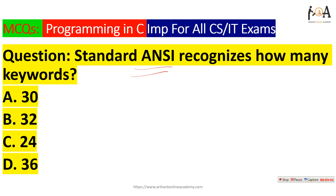The next question asks how many keywords standard ANSI C recognizes. This is a basic theory question. The standard ANSI — American National Standards Institute — recognizes 32 keywords in the C language. So the answer is 32 keywords.